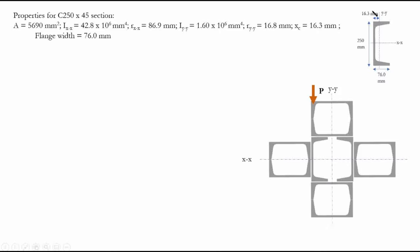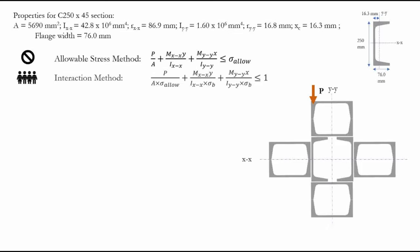We have two formulas: one for the allowable stress method and one for the interaction method. We need to find P, but MXX and MYY both have a component of P. So if we find all the other values in these formulas, we can solve the inequalities and find the column capacity P.